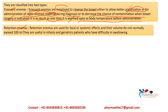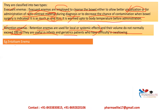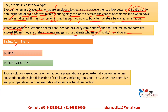Retention enemas are used for local or systemic effect, and the volume does not normally exceed 100 ml. They are useful in infants and geriatric patients who have difficulty in swallowing. The drugs used are mostly anti-inflammatory or anti-asthmatic drugs. An example is Antiform enema. Enemas are labeled 'for rectal use only.'